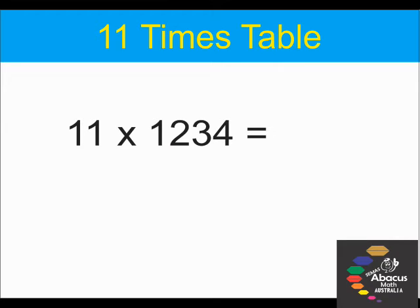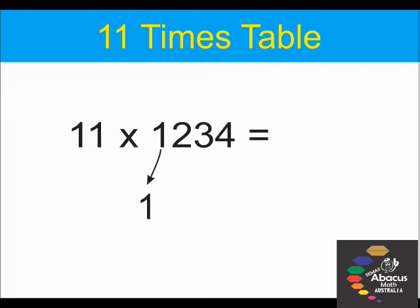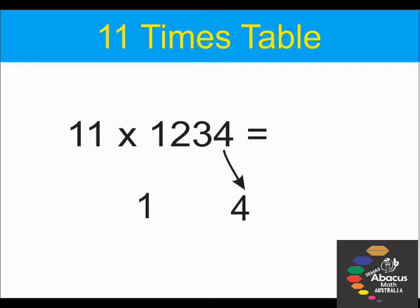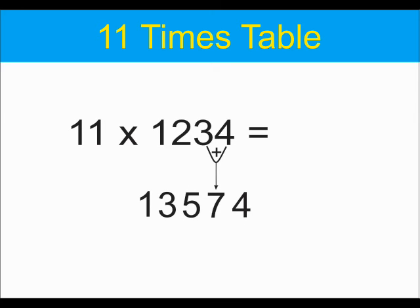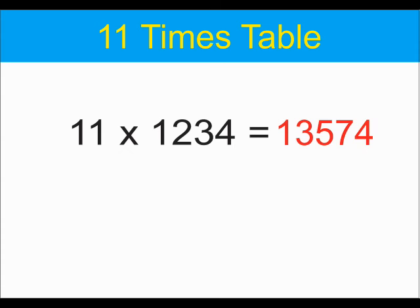Let's look at 3 digits multiplied by 11, 534. 5 goes to the front and the 4 goes to the back. Next step we will add the 5 and the 3 together to give us 8. Next step we will add the 3 and the 4 together to give us 7. Our answer is 5874.